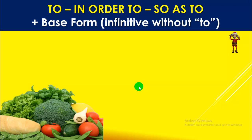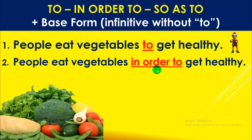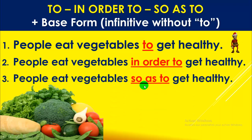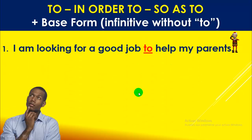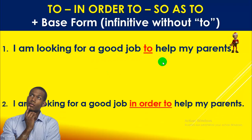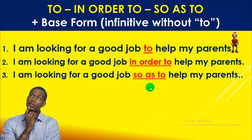Another example: people eat vegetables to get healthy, in order to get healthy, so as to get healthy. Number three: I am looking for a good job to help my parents — 'to' + base form. In order to help my parents, so as to help my parents.